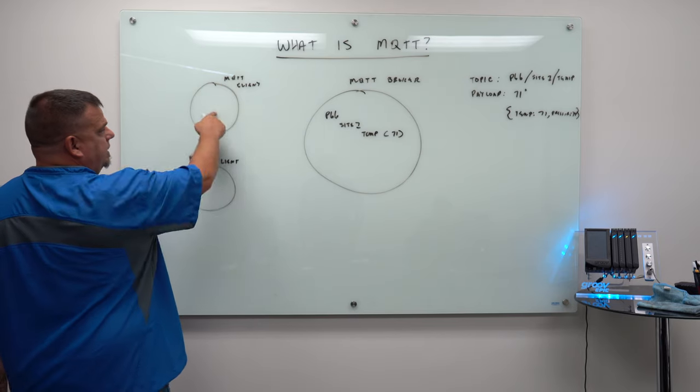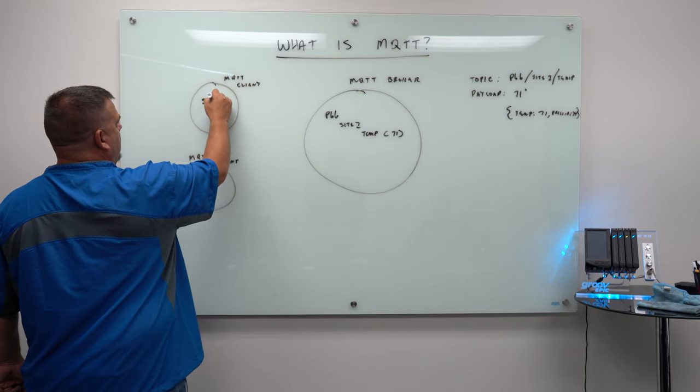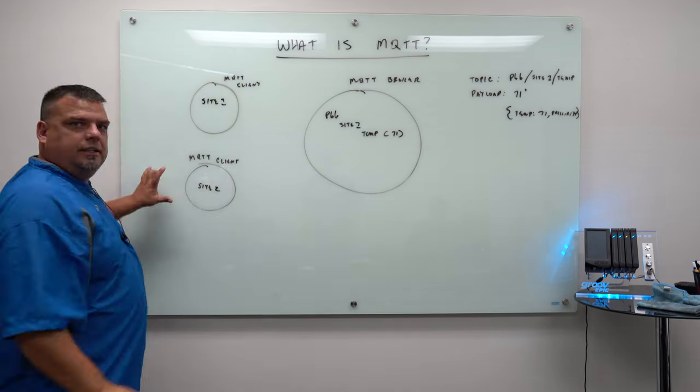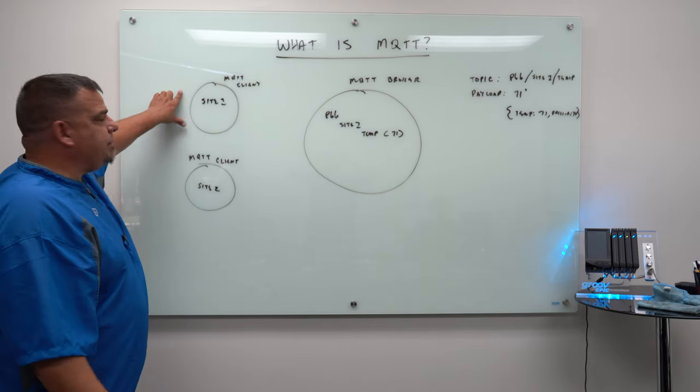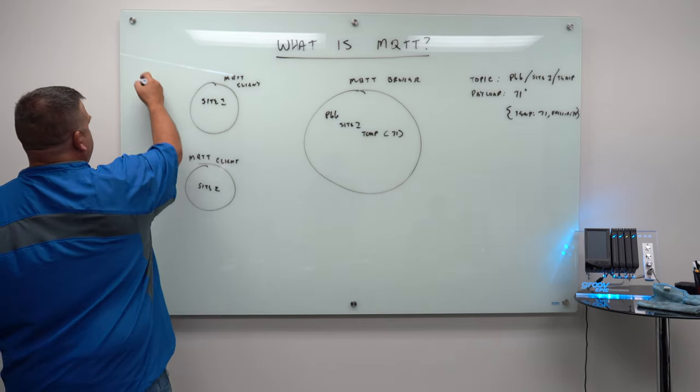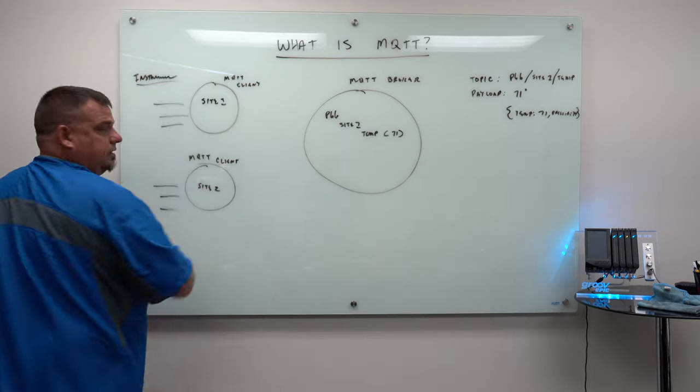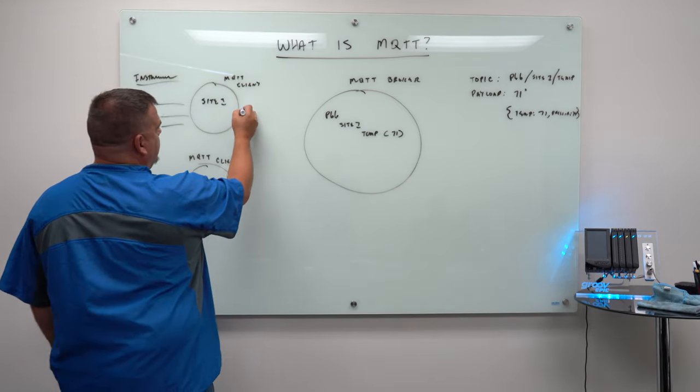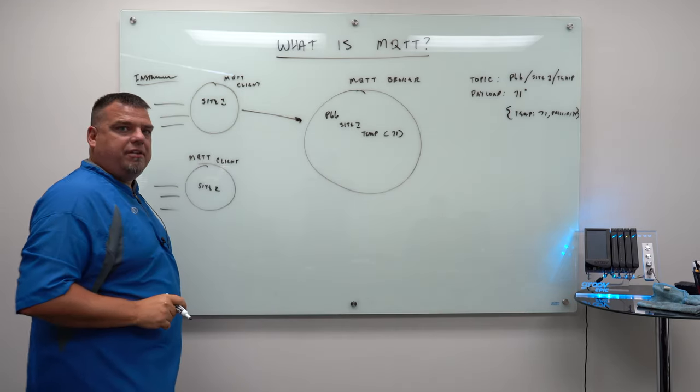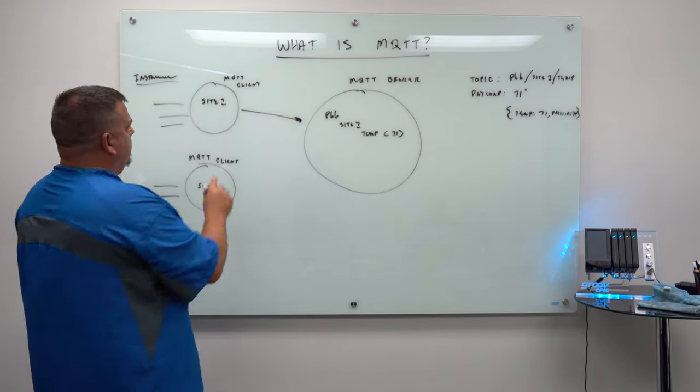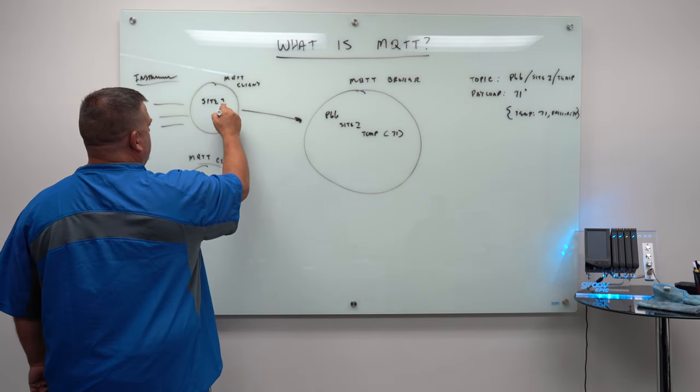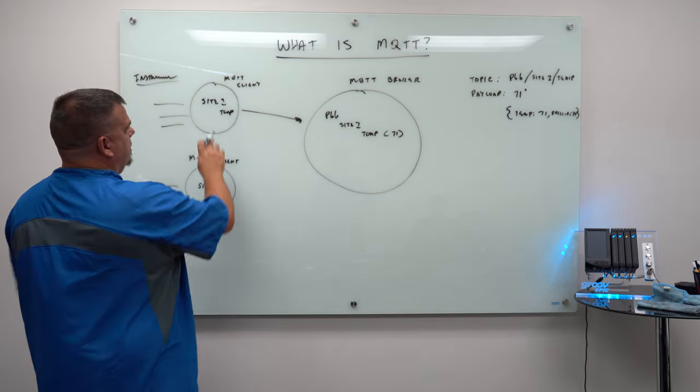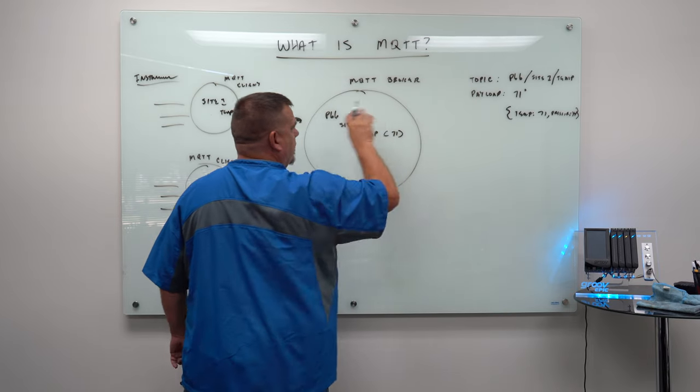Now what I've done is this will be site one, and this will be site two. I install an MQTT client at my sites. I monitor all my instrumentation out here. And whenever the values change, I publish an update to the broker on that value.